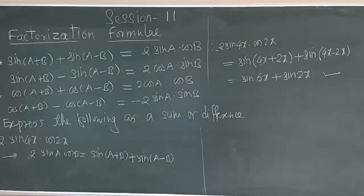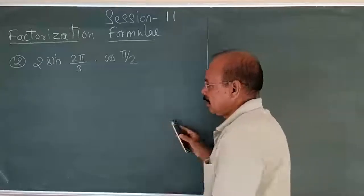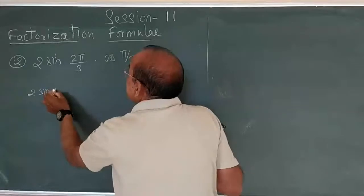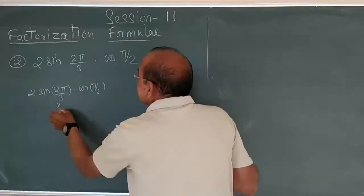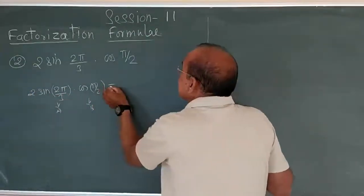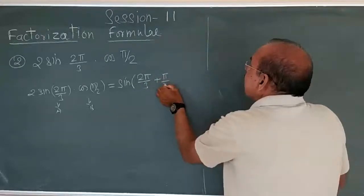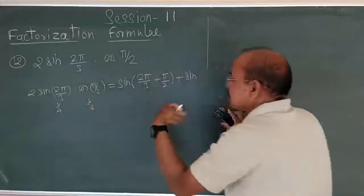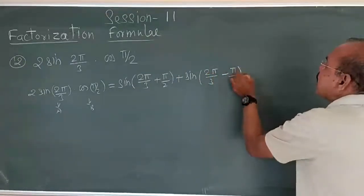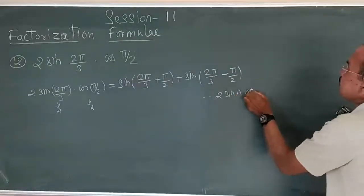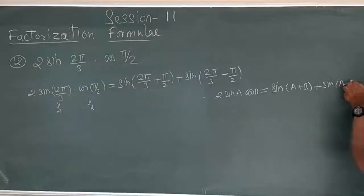One more problem: 2 times sin of 2π upon 3 into cos of π upon 3. Using the same formula: 2 times sin A cos B equals sin A plus B plus sin A minus B. Here A is 2π/3 and B is π/3. So it equals sin of 2π/3 plus π/3, plus sin of 2π/3 minus π/3.